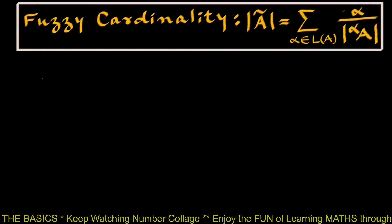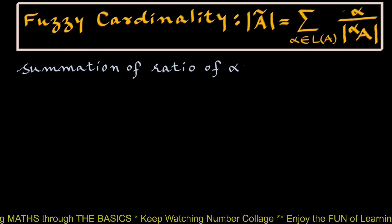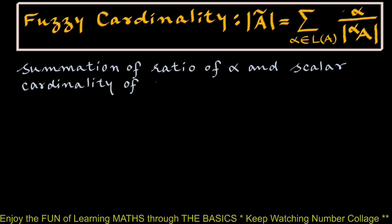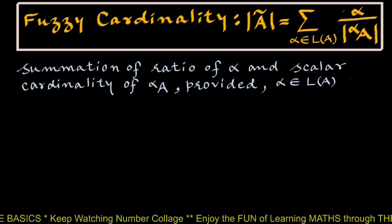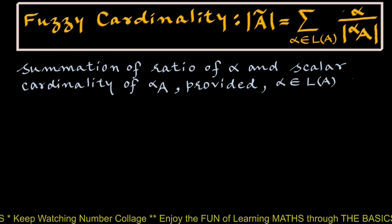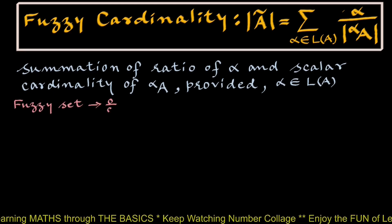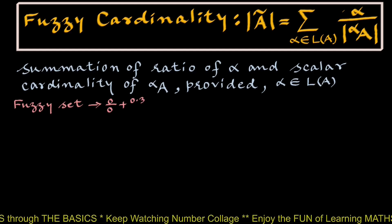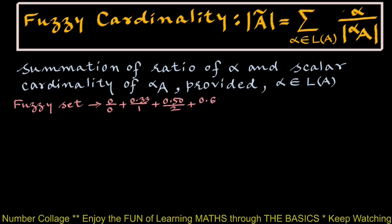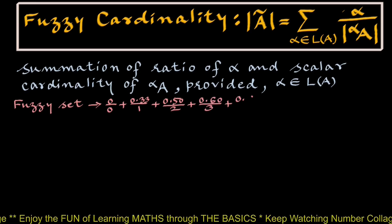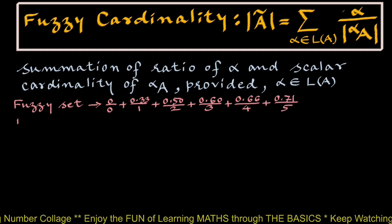Fuzzy cardinality is the summation of the ratio of alpha and scalar cardinality of alpha cut A, provided alpha belongs to level set L. We will try to understand fuzzy cardinality through a simple example. Suppose we are given a fuzzy set A as: 0/0 + 0.33/1 + 0.50/2 + 0.60/3 + 0.66/4 + 0.71/5.